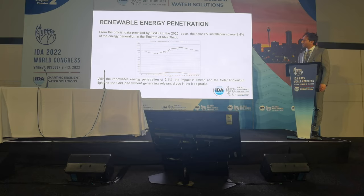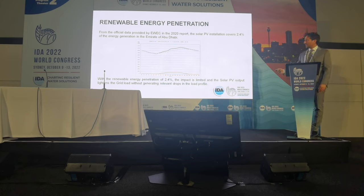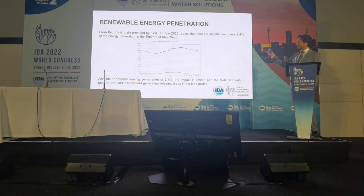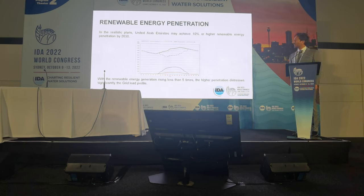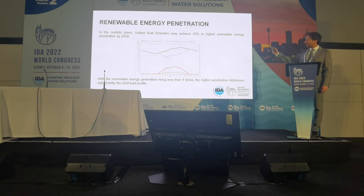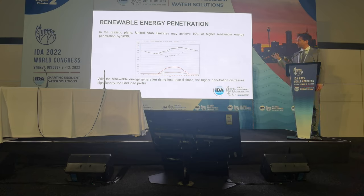This graph shows the production profile of Abu Dhabi. The orange on the bottom is the renewable production, which is only 2.4% of the total — very limited impact, and the network is resilient enough to accept this penetration without trouble. But if we increase to the 10% target — less than five times the current penetration — we get the duck curve. The duck curve, developed in California, shows that a big penetration of renewables has a huge impact on the production profile.